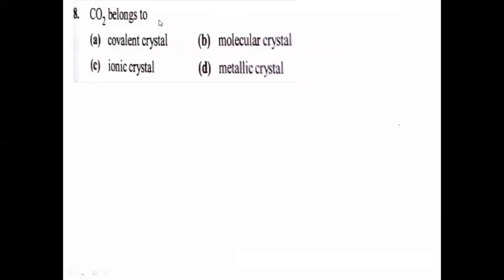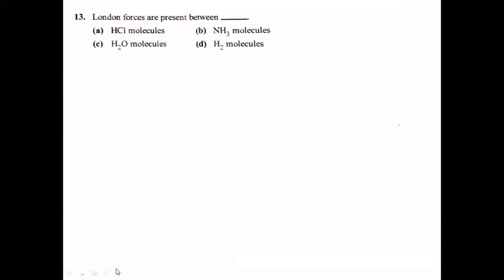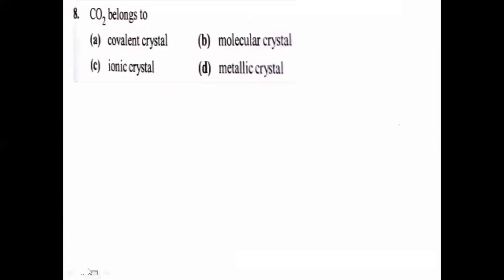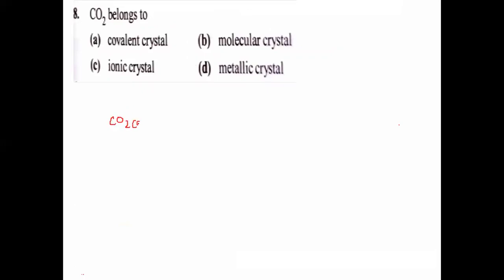CO2 belongs to which crystal type? First of all, CO2's natural state is gas. When we convert CO2 to solid state - when it is solidified - it comes under molecular crystals. So the answer is B.